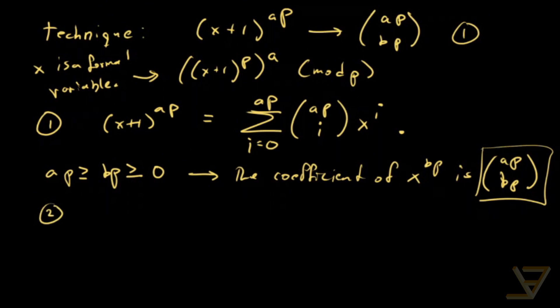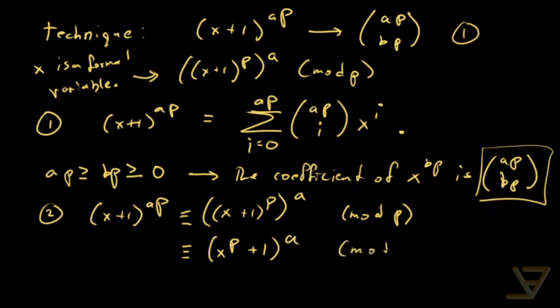The second thing is that we're going to be expanding x plus 1 to the a p as x plus 1 to the p to the a. And it's all going to be modulo p. And because this is mod p, we can use a Frobenius endomorphism, which I've talked about in a different video. We can get that this is x to the p plus 1 to the power of a mod p.